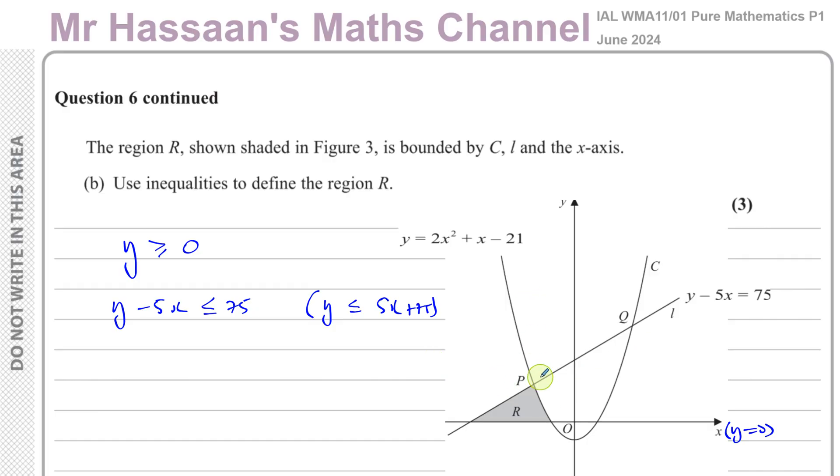And then finally, the curve. Anything that's inside the curve is considered above it, so it's greater than. Anything on the outside of the curve is considered below it, so less than. So we can say y is less than or equal to 2x squared plus x minus 21. So those three inequalities define this.